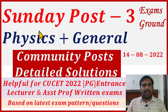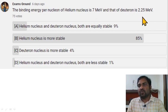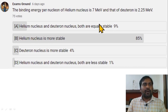Hello friends, good morning and welcome to Sunday Post 3. In this video, I am going to solve questions posted in the community from last week. Let's start. The binding energy per nucleon of helium nucleus is 7 MeV and that of deuteron is 2.25 MeV.